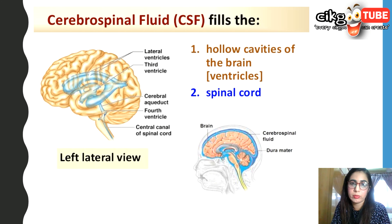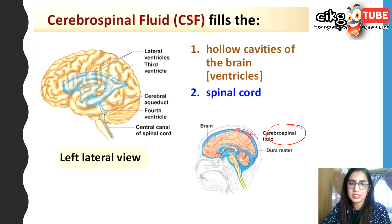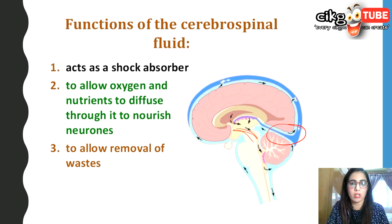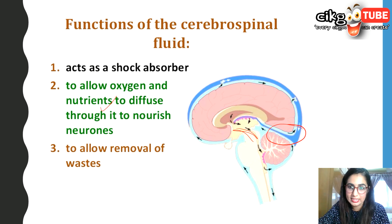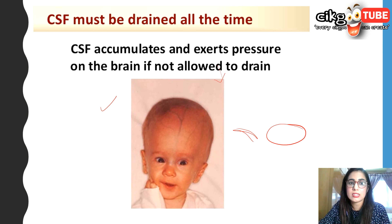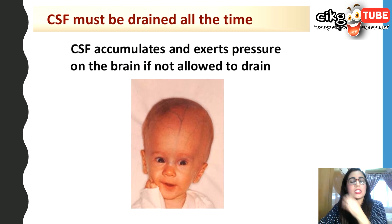The cerebrospinal fluid (CSF) fills the hollow cavities of the brain and also the spinal cord. It functions to absorb shock, to allow oxygen and nutrients to diffuse through it to nourish the neurons, and to allow removal of waste. The CSF has to be drained all the time; if not, it will accumulate and exert pressure on the brain.